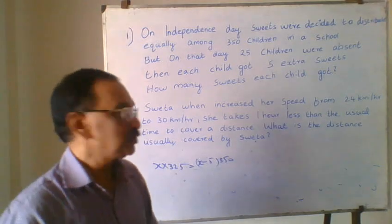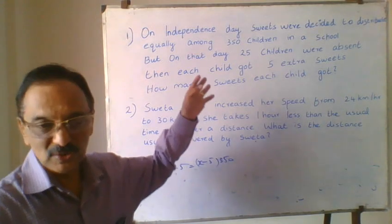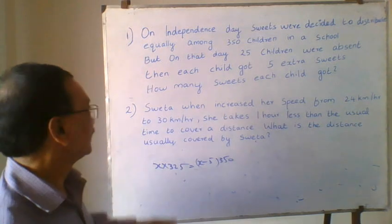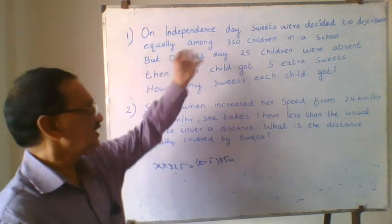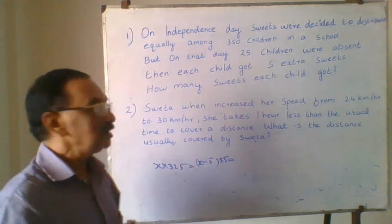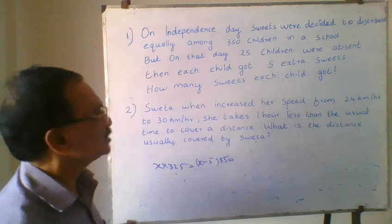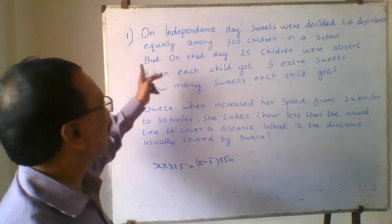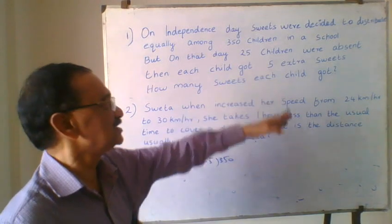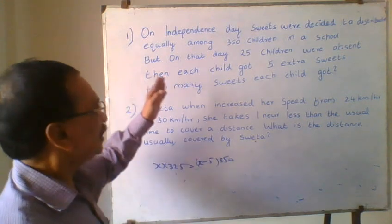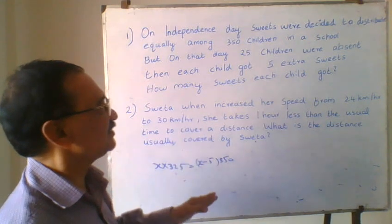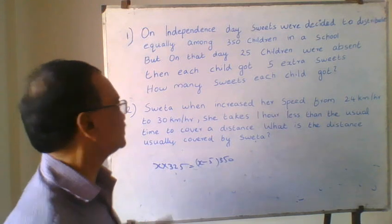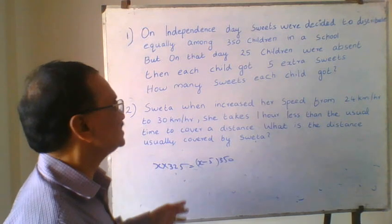Today I would like to solve a question which was asked in one of the examinations two years back. The question is: on Independence Day, sweets were decided to be distributed equally among 350 students in a school. But on that day 25 children were absent, and each child got 5 extra sweets. How many sweets did each child get?